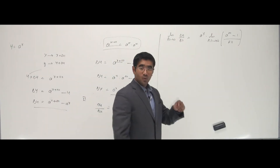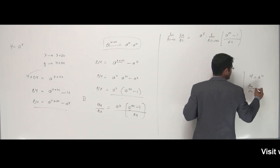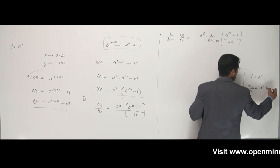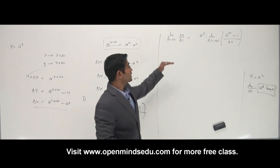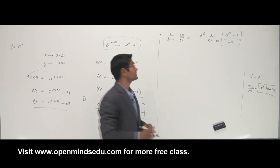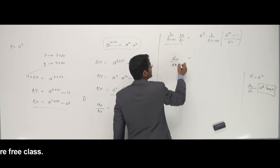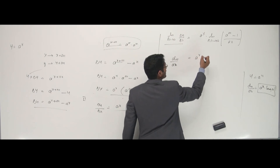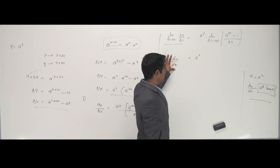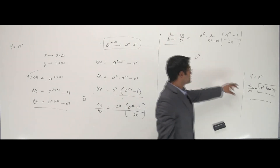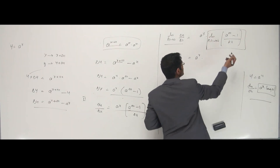Now you should know one thing. If I differentiate y equals a to the power x, the answer is dy by dx equals a to the power x into log a. That's the answer. Now, between my answer and this step, dy by dx is there, a to the power x is there. The only thing missing is log a. So this whole limit expression has to become log a.